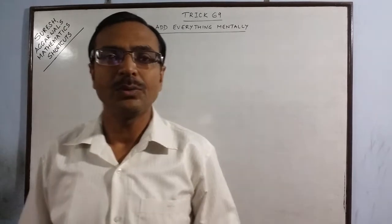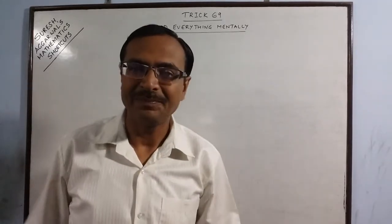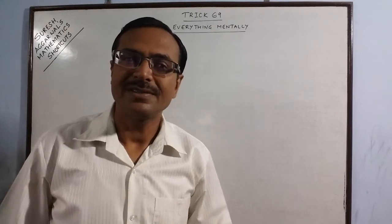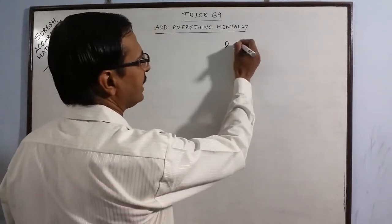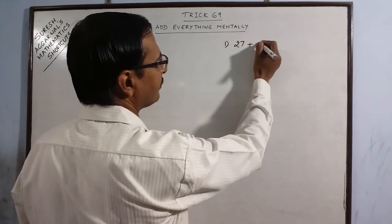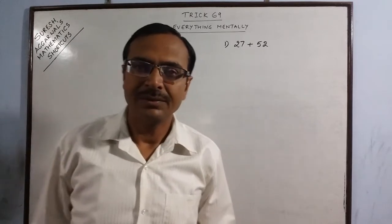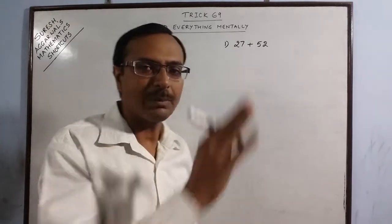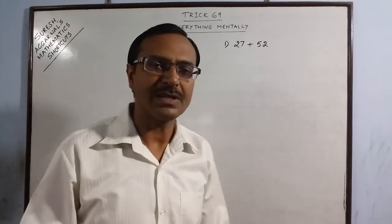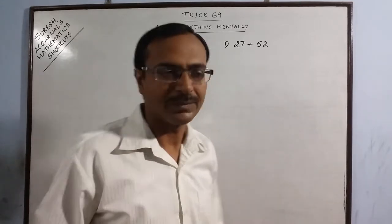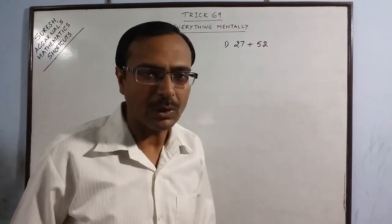So today I am going to tell you how we can add everything mentally. So for this I will take a very simple example of 27 plus 52. Now traditional addition you write these two numbers one below the other and then add the unit's place followed by the 10's place followed by the 100's place and so on. But in mental addition you do it the other way round.